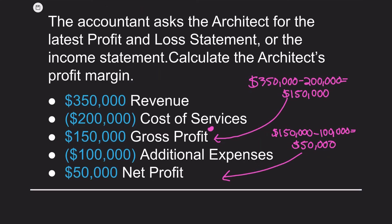The accountant asks the architect for the latest profit and loss statement, or income statement. The P&L statement summarizes the revenues, costs, and expenses incurred during a specified period. The advantage of using the margin method is that it translates to the P&L statement and is used to calculate the profit margin for the firm as a whole. In this example, the architect is generating gross revenue of $350,000. The cost for the architect's services amounts to $200,000. Subtracting the cost of services from gross revenue, the architect makes $150,000 in gross profit. There are additional expenses of $100,000, leaving $50,000 of net profit.